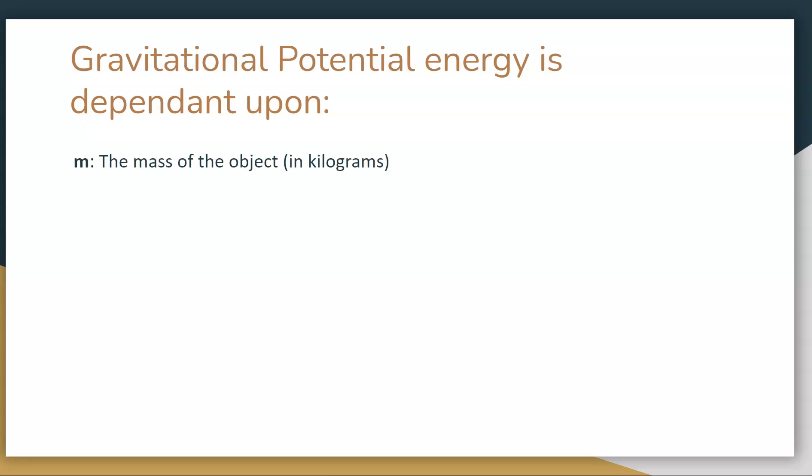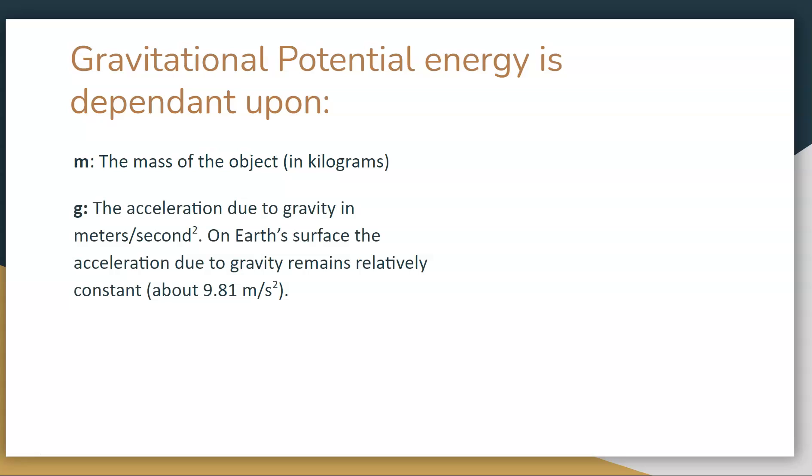We can calculate gravitational potential energy by looking at a few things. We need to know the mass of an object in kilograms. We have to know a constant called the acceleration due to gravity. I will give you this constant all the time. It'll be on your data sheet. It is 9.81 meters per second squared.